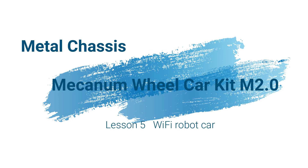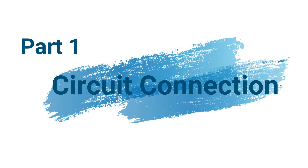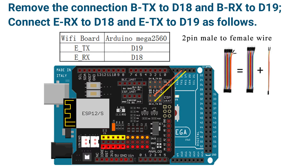Metal Chassis Mecanum Wheel Car Kit M2.0, Lesson 5 Wi-Fi Robot Car Part 1 Circuit Connection. Remove the connection BTX to D18 and BRX to D19. Connect TRX to D18 and ETX to D19.